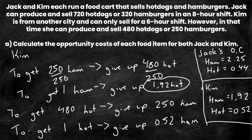So now we've calculated all four opportunity costs. Jack's opportunity cost for hamburgers is 2.25 hot dogs; Jack's opportunity cost for hot dogs is 0.44 hamburgers. Kim's opportunity cost for hamburgers is 1.92 hot dogs; and Kim's opportunity cost for hot dogs is 0.52 hamburgers.